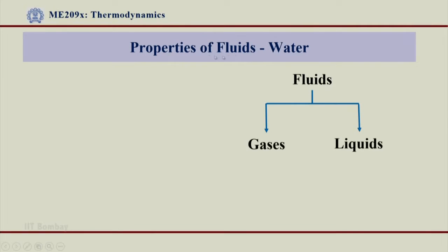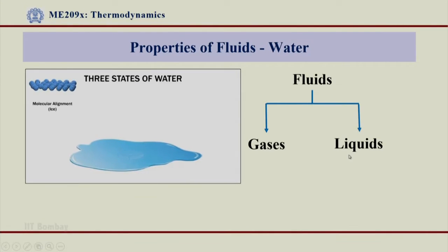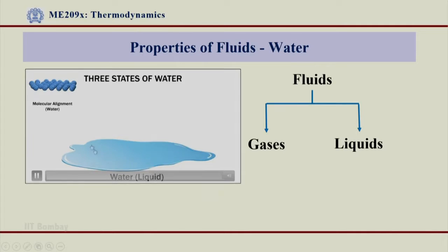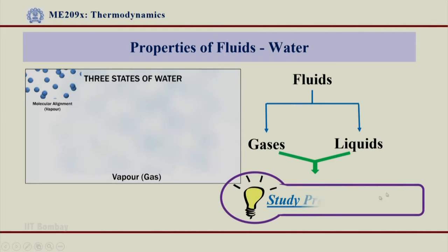If I were to study properties of fluid and I go for water, water exists in gaseous form and liquid form. My properties of fluids can therefore be kept limited to water only. I will study the properties of fluid through water where I can have the gaseous phase, the liquid phase, and a combined gaseous plus liquid phase which is also a pure fluid. I conclude that the properties of fluid can be understood by studying the properties of water henceforth.